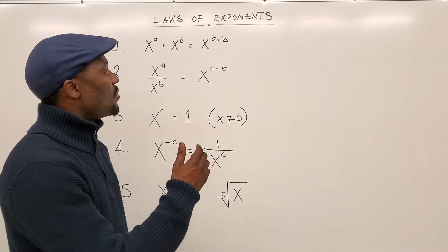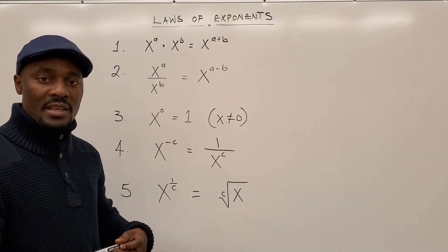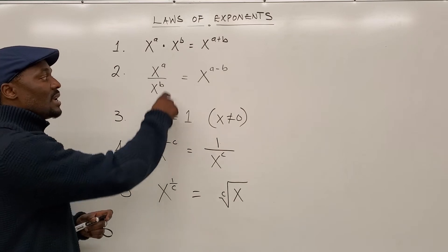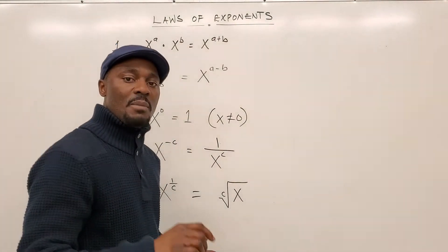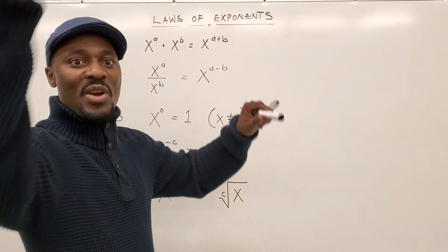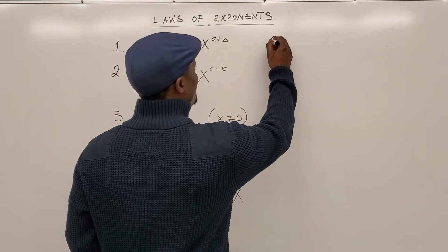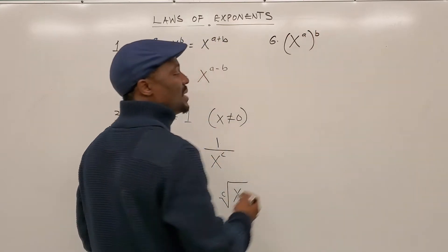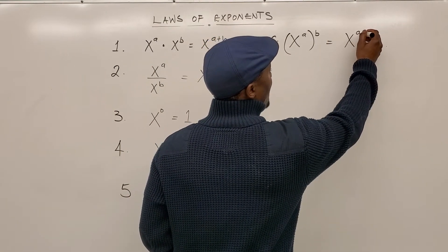So I'm going to write the next three. The next one will be the power of a power — that's rule six — where a number is raised to a power and then raised to another power. Number six: x to the power of a, then raised to the power of b, equals x raised to the power of a times b.